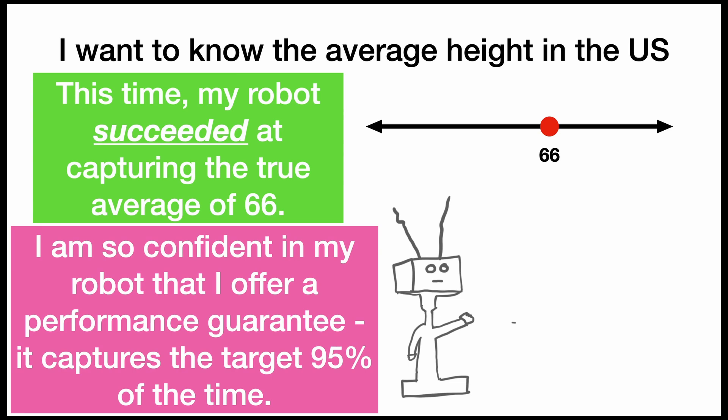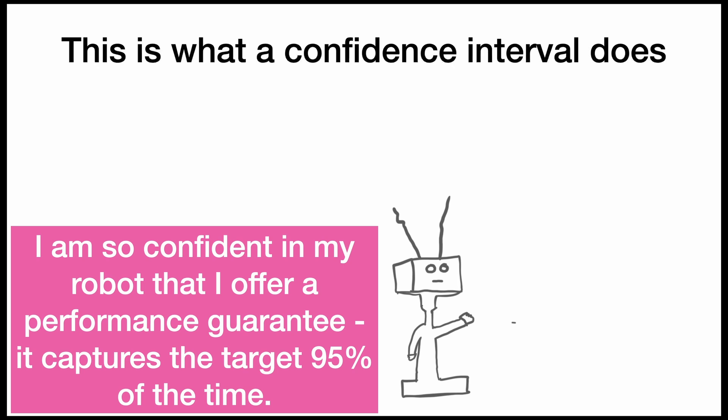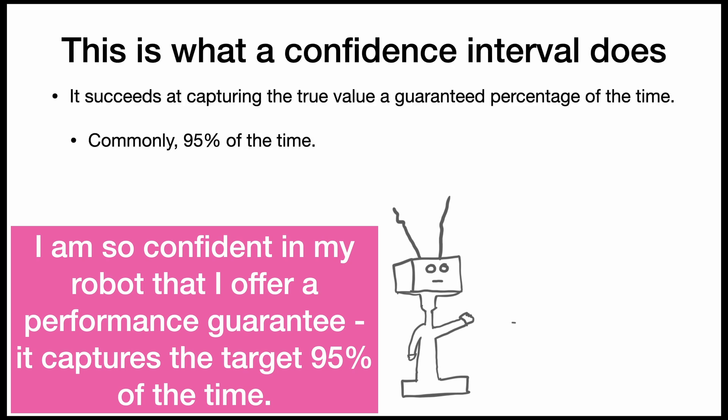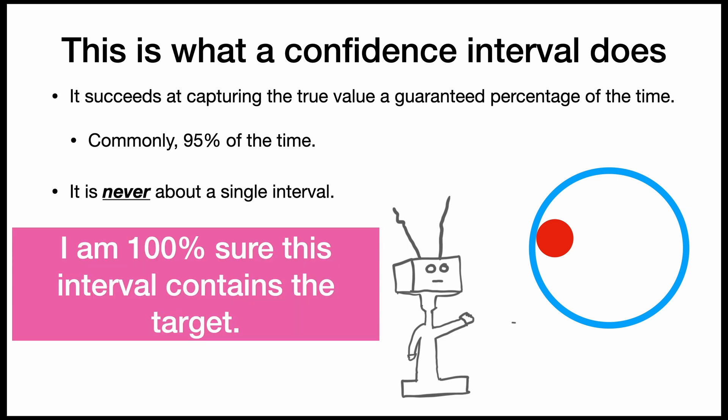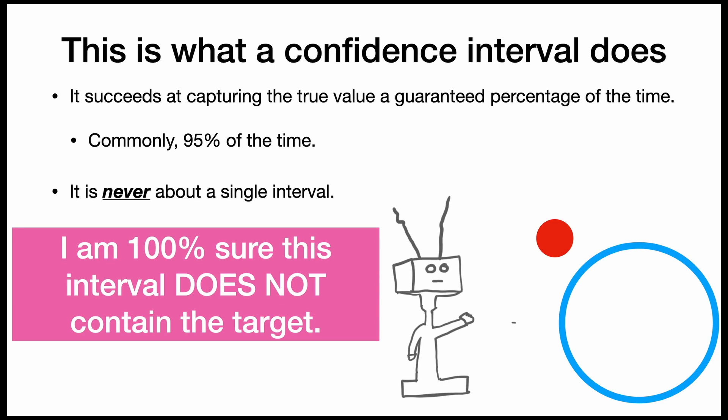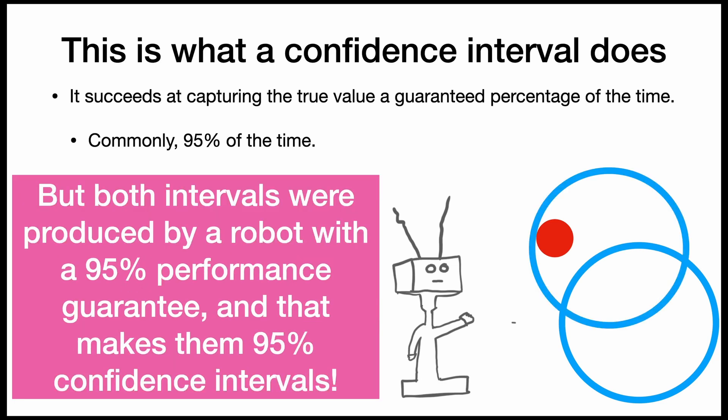I am so confident in my robot that I offer a performance guarantee: this robot will capture the target 95% of the time. This is what a confidence interval does — it succeeds at capturing the true value a guaranteed percentage of the time, commonly 95%. It is never about the single interval. I am 100% sure that this interval contains the target, and I am 100% sure that this interval does not contain the target. But both intervals were produced by a robot with a 95% performance guarantee, and that makes them 95% confidence intervals.